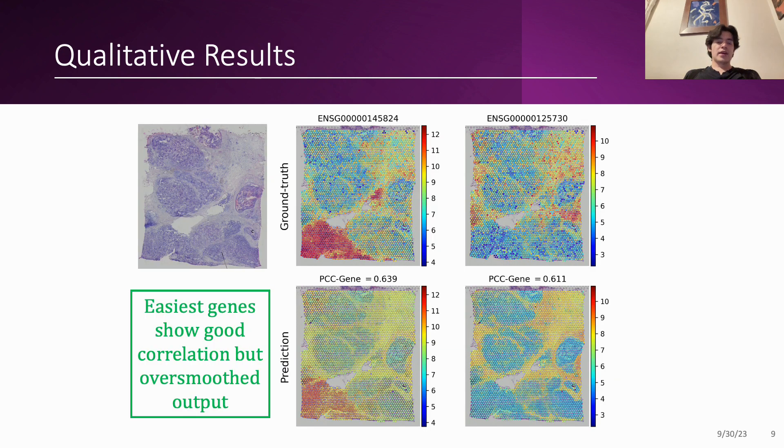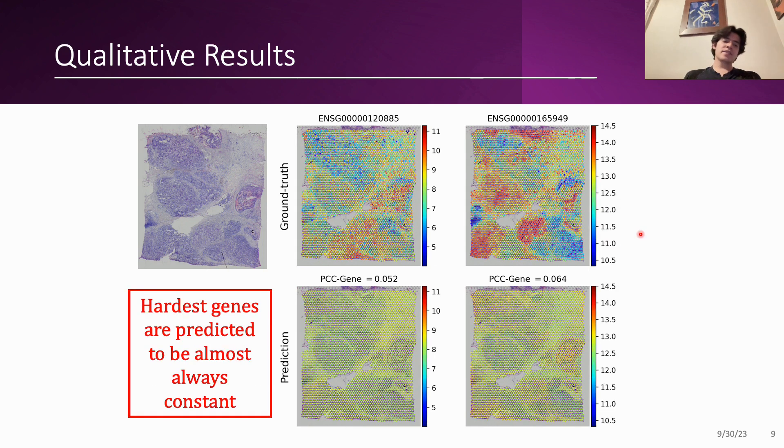And with that, now I can show you some qualitative results. Here are the best predicted genes. You can see that we do achieve a good level of correlation. However, the output is in most cases over-smoothed. And in the hardest genes what we can observe is that the prediction is always almost constant.